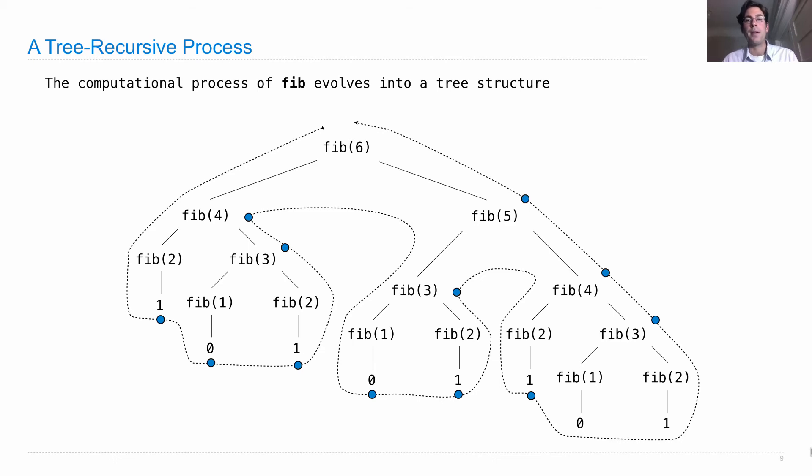And then we compute fib(4) again, which is 2. So 1 and 2 is 3, and 3 and 2 is 5. So that's the order in which we compute these things.